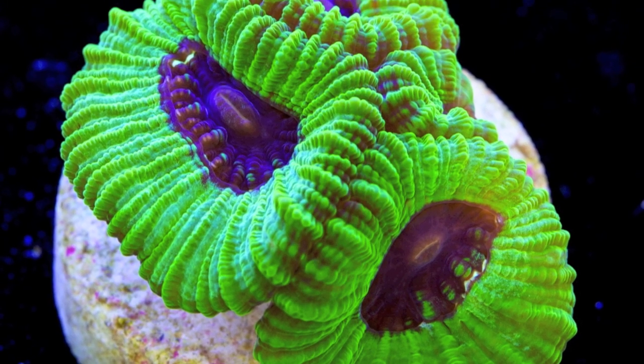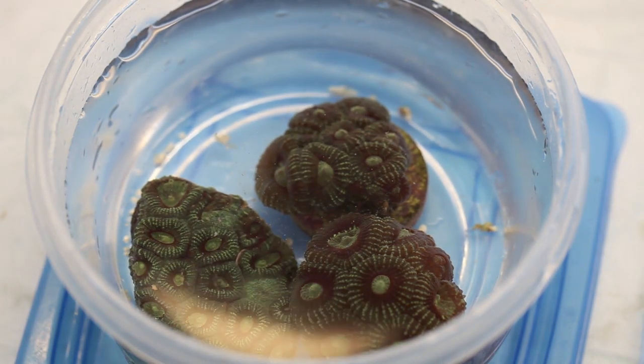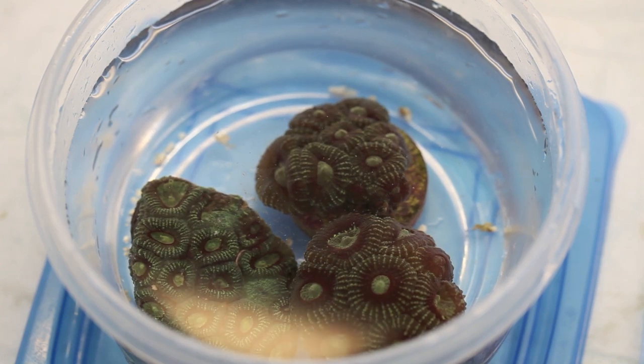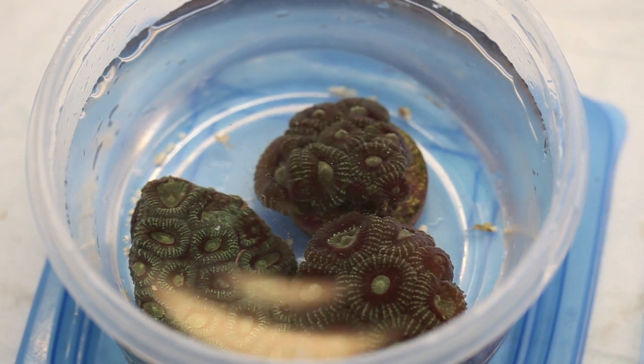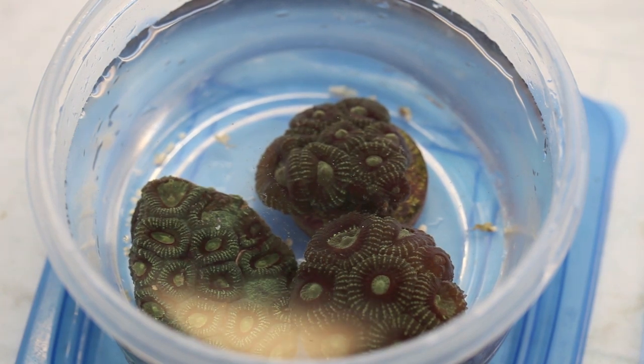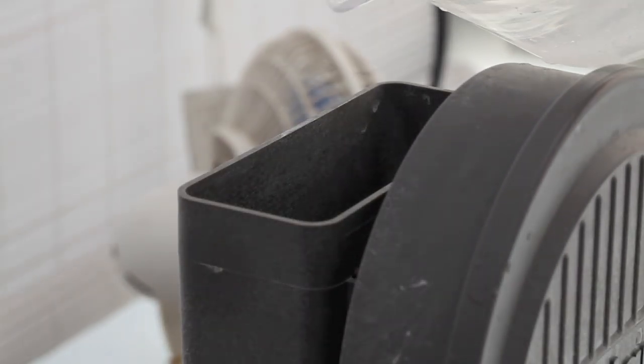So it's still a little bit up in the air whether Favia make really good candidates for propagation to begin with. The major issue with them is that they're one of the slowest growing stony corals out there. Still, they're fairly easy to propagate and even with their growth rate issues, a lot can be learned from just practicing on them.